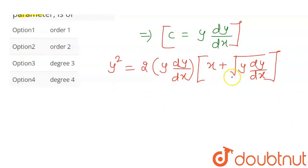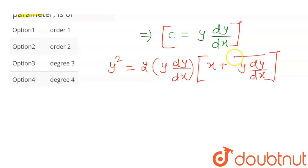We can still determine the order, because for order we don't worry about square roots — we just count the highest number of differentiations. But for degree, the square root must be removed first. Only when the square root is gone can we clearly state the degree. So let's simplify further to eliminate the square root.